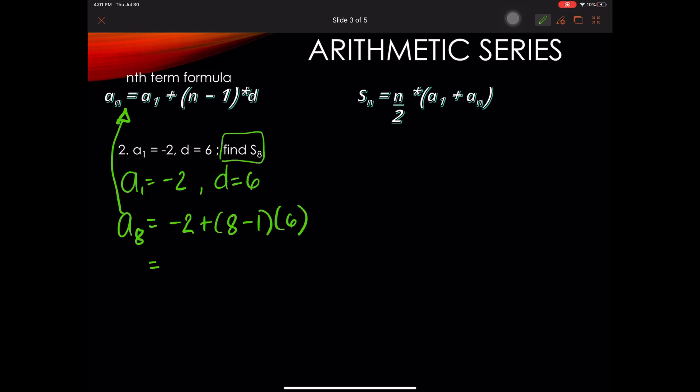Simplifying the right side, we are going to have negative 2 plus 7 times 6, which is equal to 42. And negative 2 plus 42 gives us 40. So our 8th term is equal to 40.